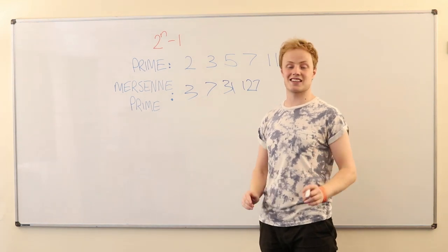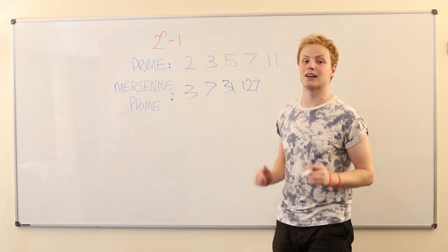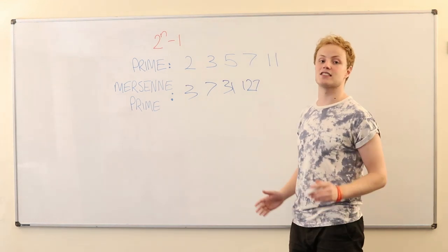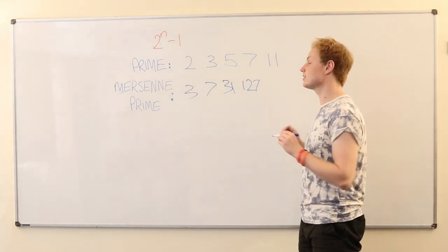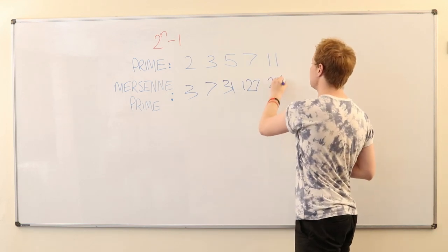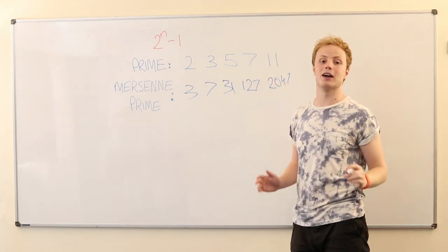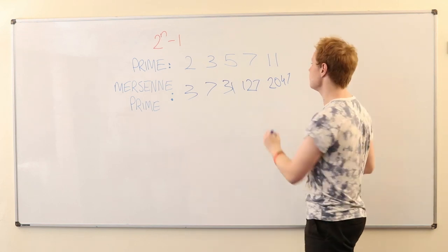However, we get to the next one along, and unfortunately, it breaks down there. 2 to the power of 11 is 2048, minus 1 to get 2047, and unfortunately, this number is divisible by 23, so it's in fact not a prime number.